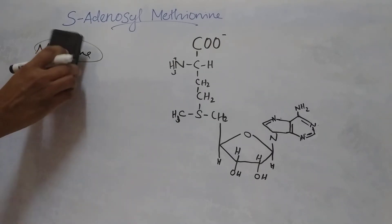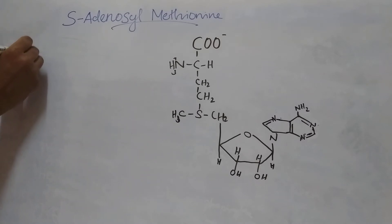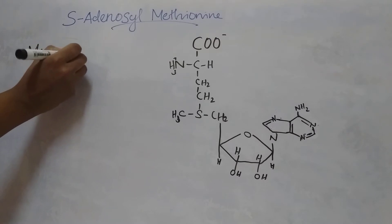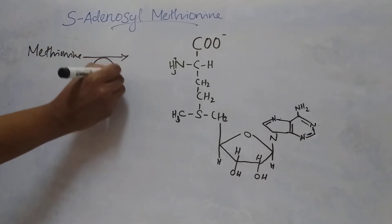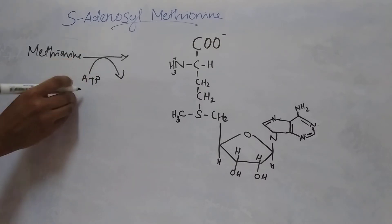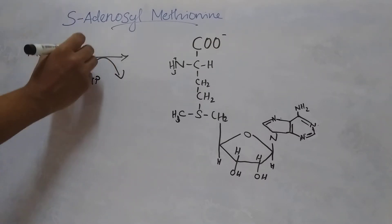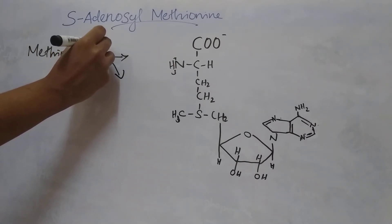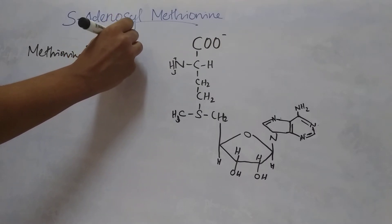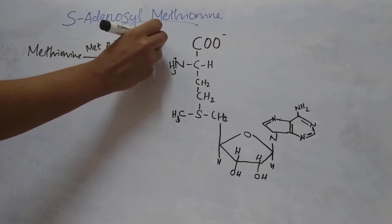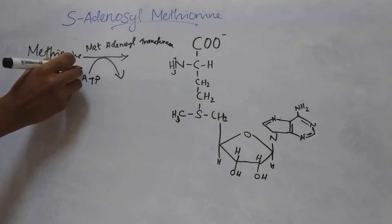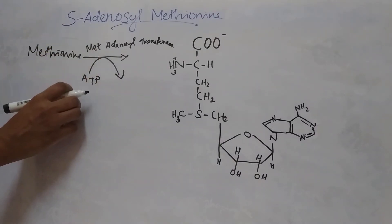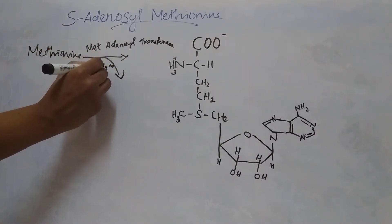In the metabolic pathway of methionine, the activation of methionine occurs in the presence of ATP. The enzyme involved is methionine adenosyl transferase. In the presence of this enzyme, there will be activation of methionine in the presence of ATP. It requires Mg++ and GSH.